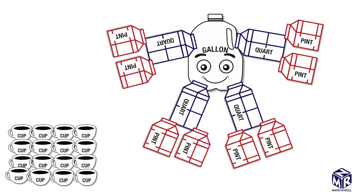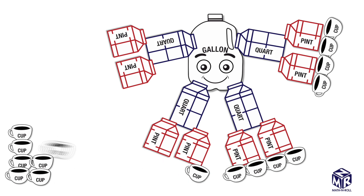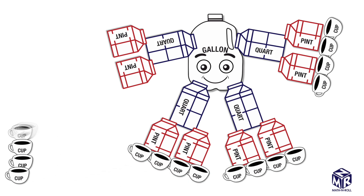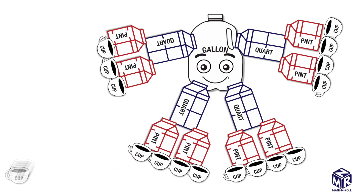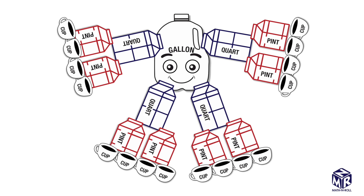Lastly, each pint consists of 2 cups, so we add 2 cups to each pint. Here we have the GALLON MAN, with arms and legs consisting of quarts, pints, and cups.